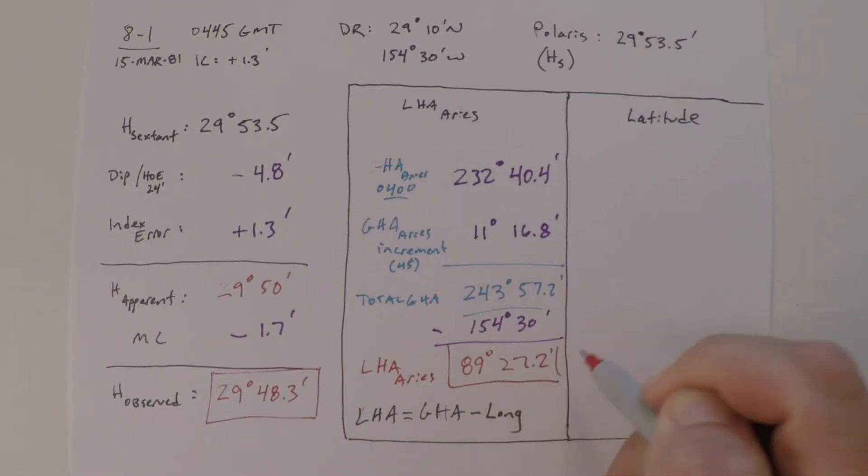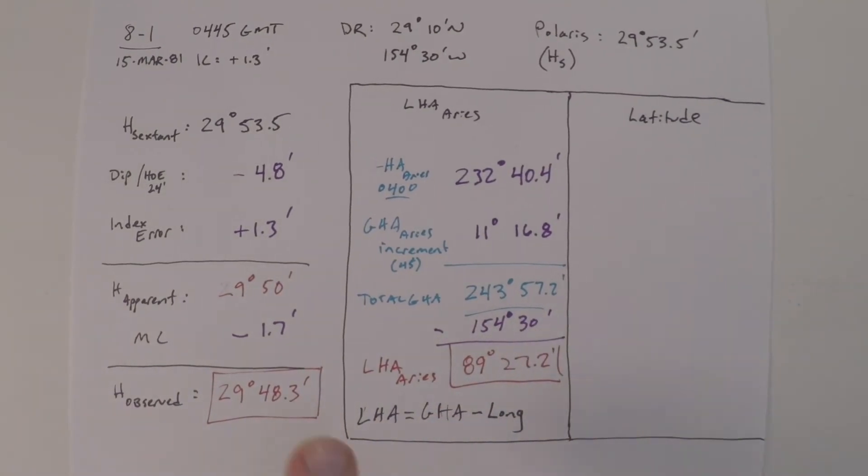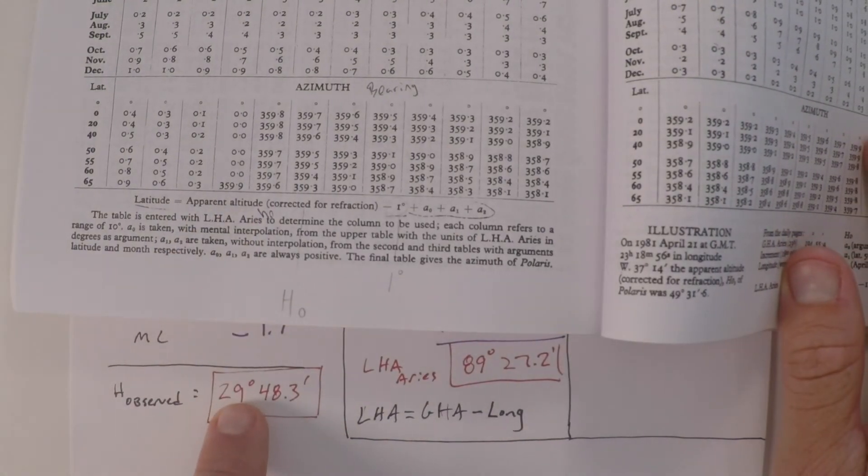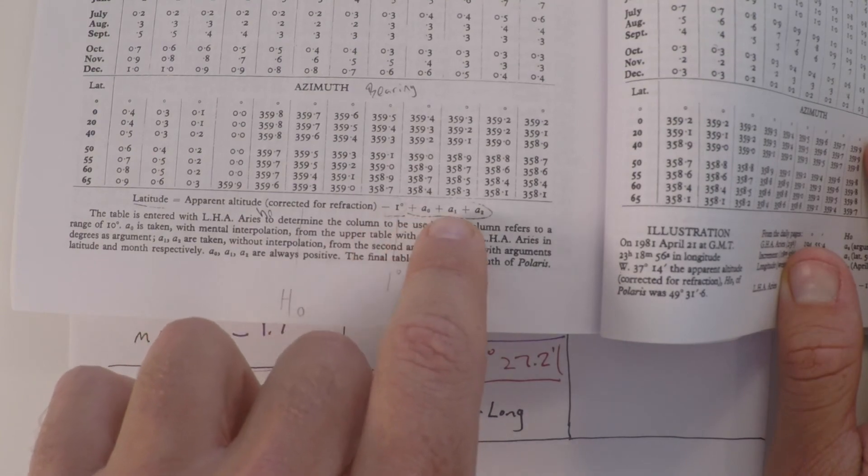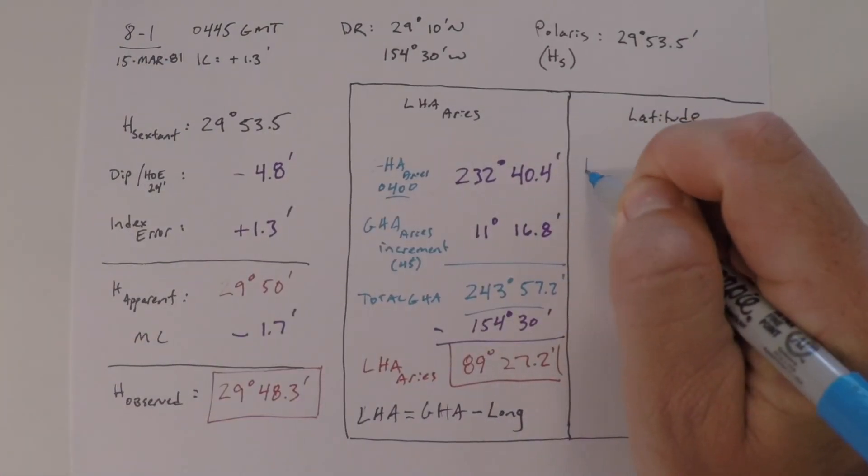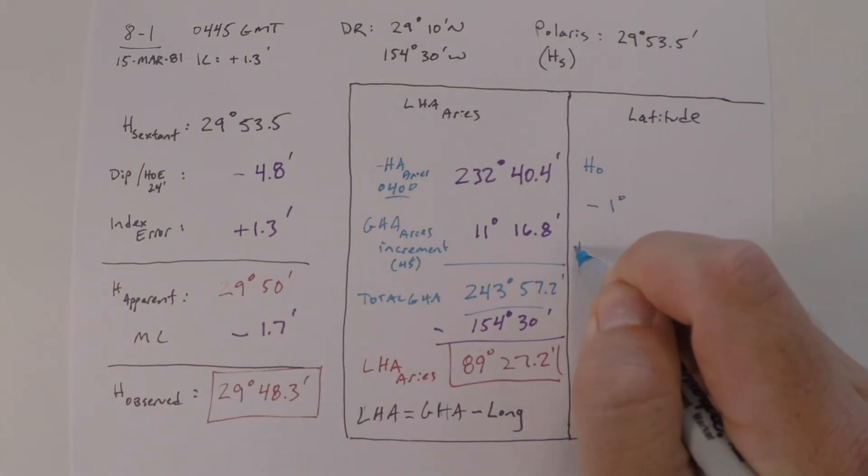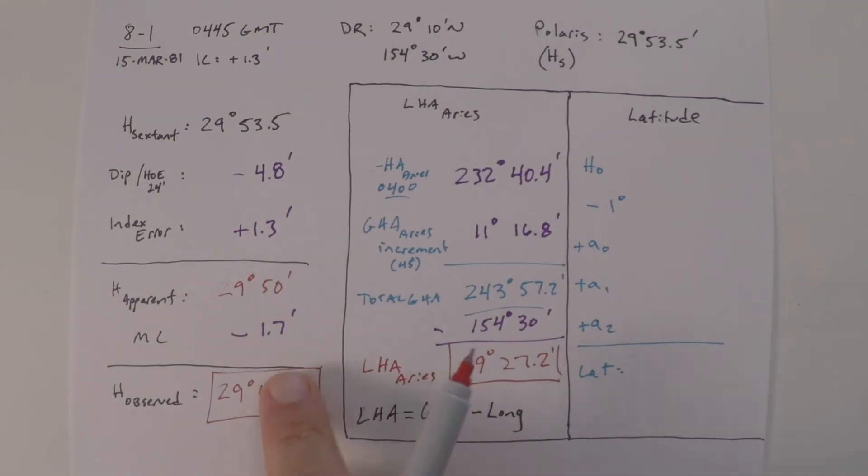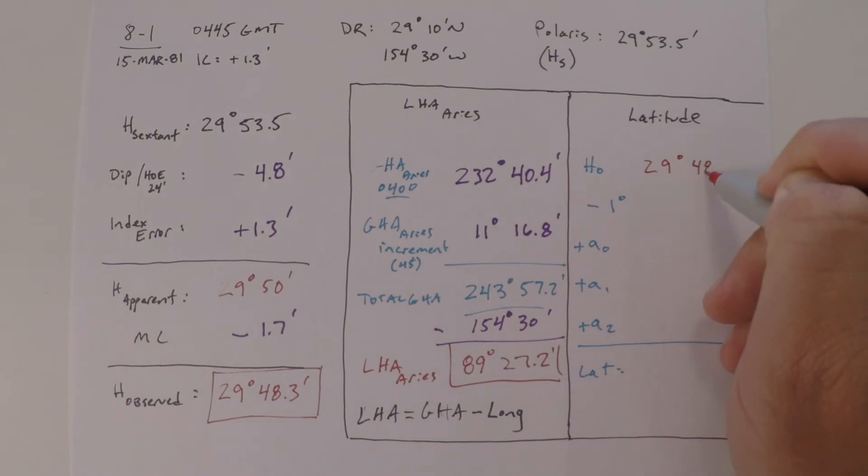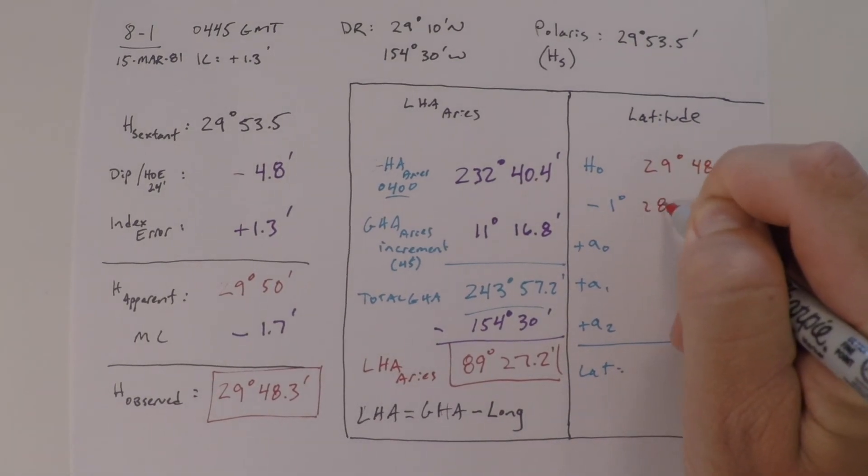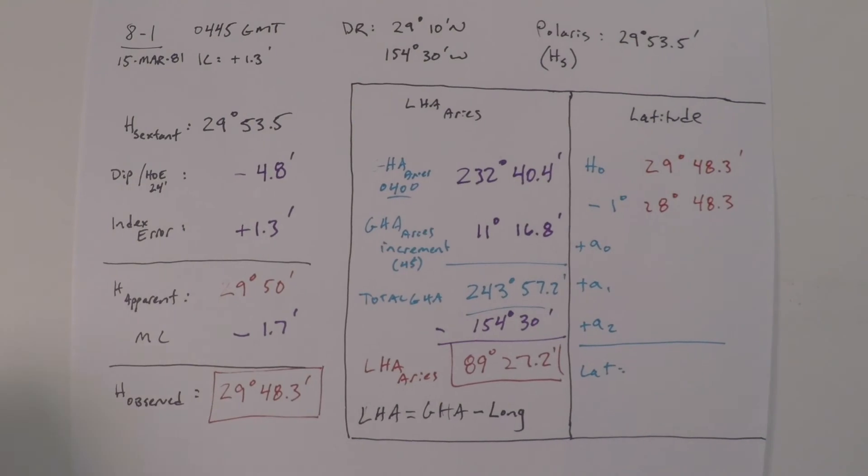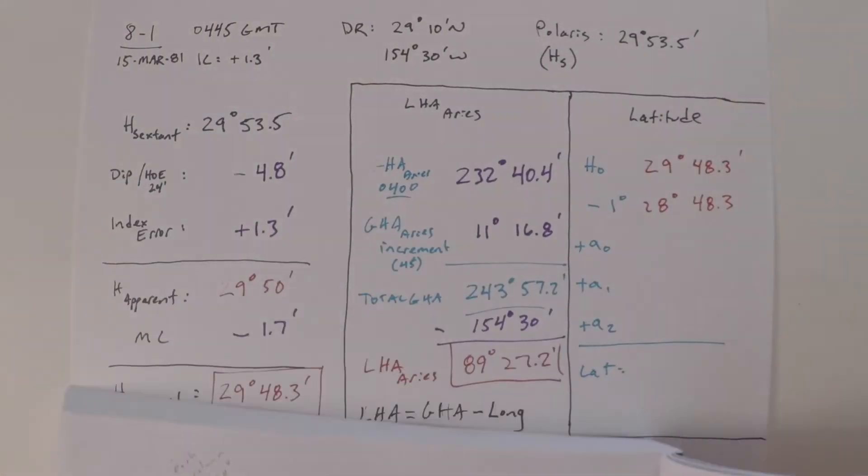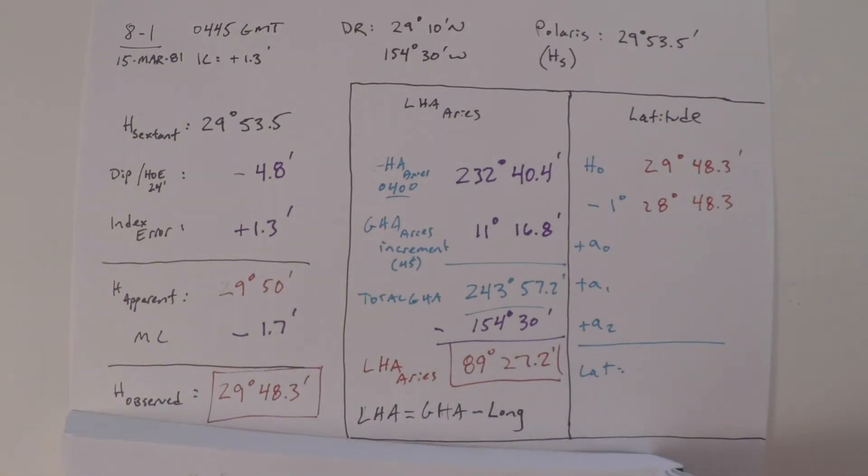Now that we have the LHA of Aries, we can use the Polaris tables in the back of the nautical almanac. We'll enter the Polaris tables with our observed altitude, with the LHA of Aries, and we'll apply those corrections. In the Polaris tables it says latitude is apparent altitude, which is our observed altitude corrected for a fraction, minus one degree plus these three corrections that we need to make. So we'll make ourselves a little formula sheet. We need our height observed minus one degree plus A0 plus A1 plus A2 will give us our latitude. Our height observed was 29 degrees, 48.3 minutes. Minus one degree is 28 degrees, 48.3 minutes.